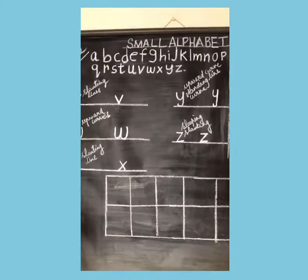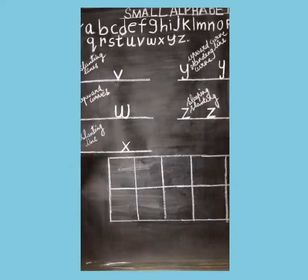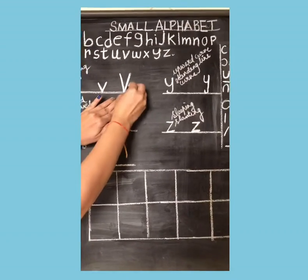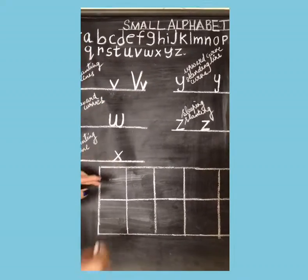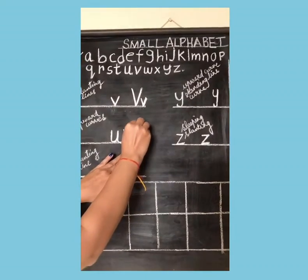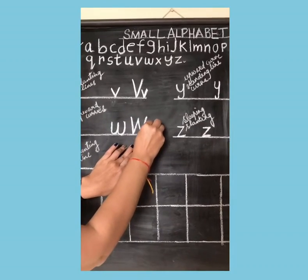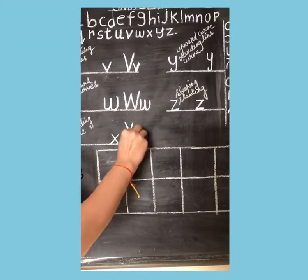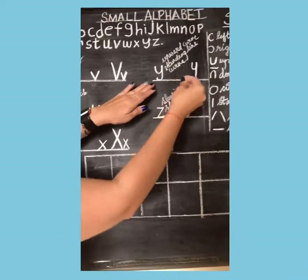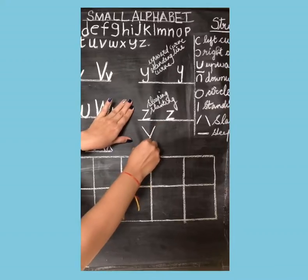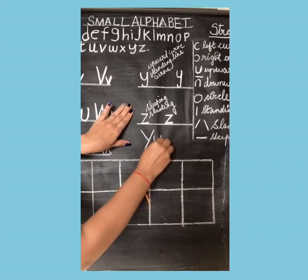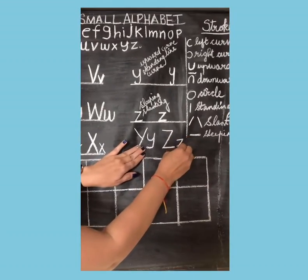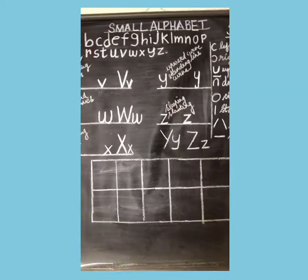Now children, I will quickly show you V to Z — how to write big and small. This is your big V, and next to it you write a small V. This is your big W, and next to it you write a small W. This is your big X, and you write a small X. This is your big Y and you write a small Y. This is your big Z and you write a small Z next to it.